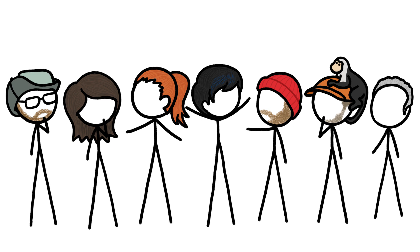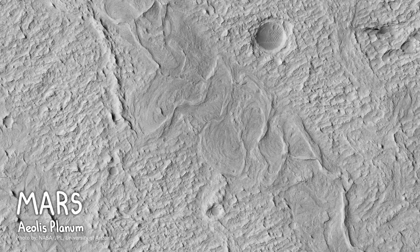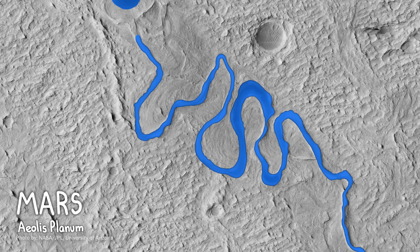This reignited an old debate we had here at MinuteEarth about this photo of the surface of Mars. That sinuous pattern on the landscape is an ancient stream channel, which is cool because it means that liquid water used to flow on Mars.